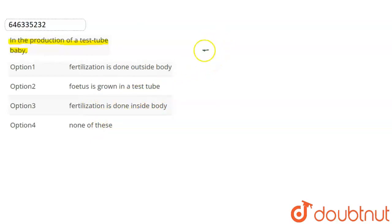So, first of all, we have to understand the test tube baby. What is the formation of test tube baby? The formation of test tube baby is in vitro fertilization. In vitro fertilization can also be said as IVF technique.